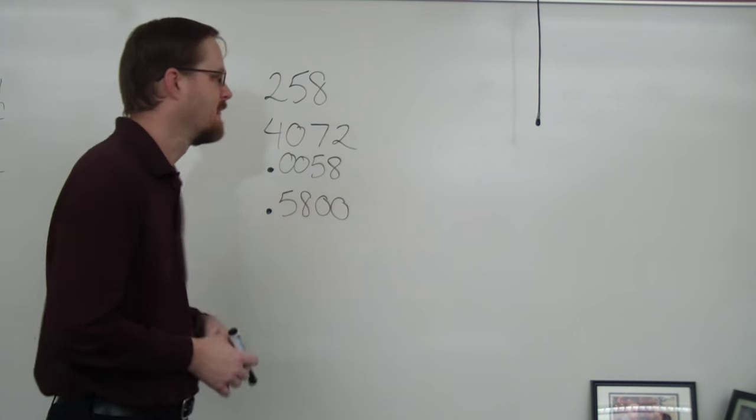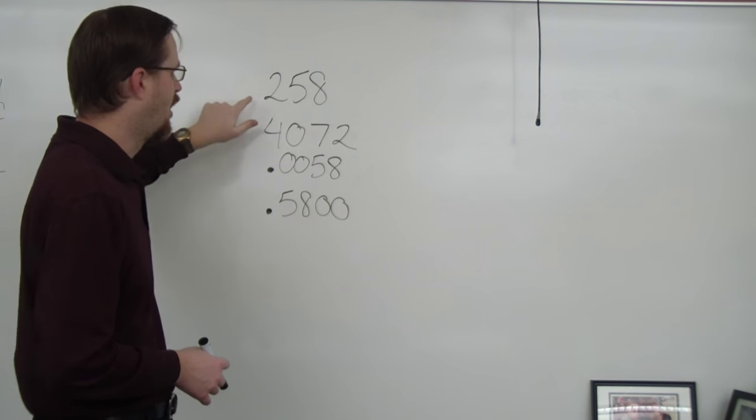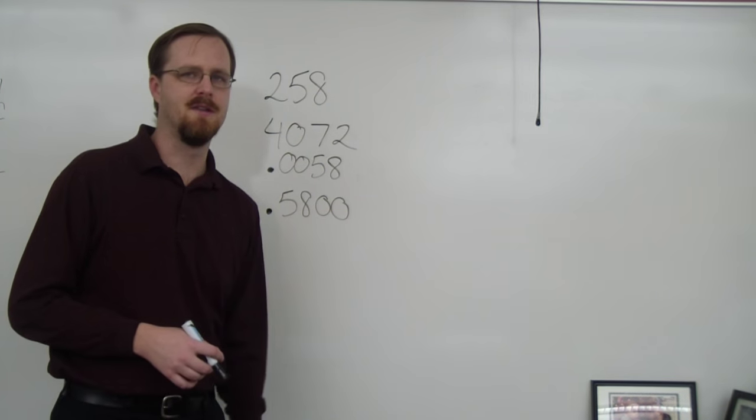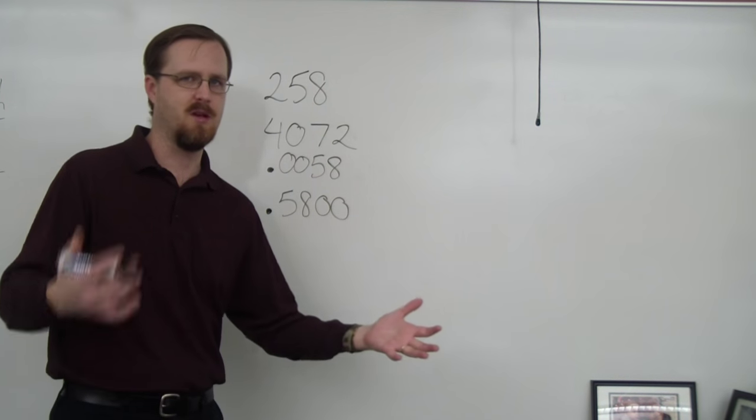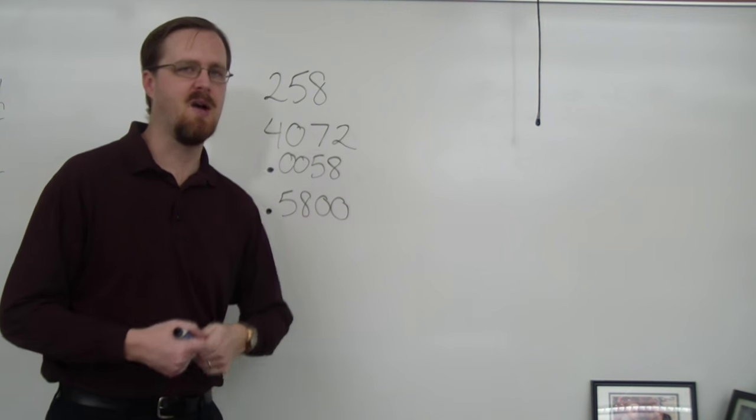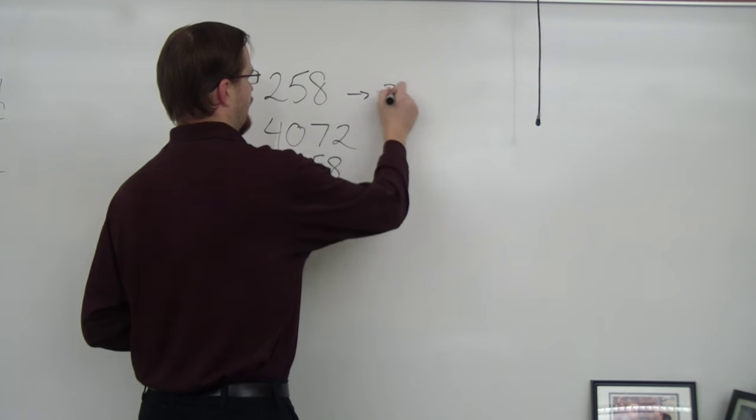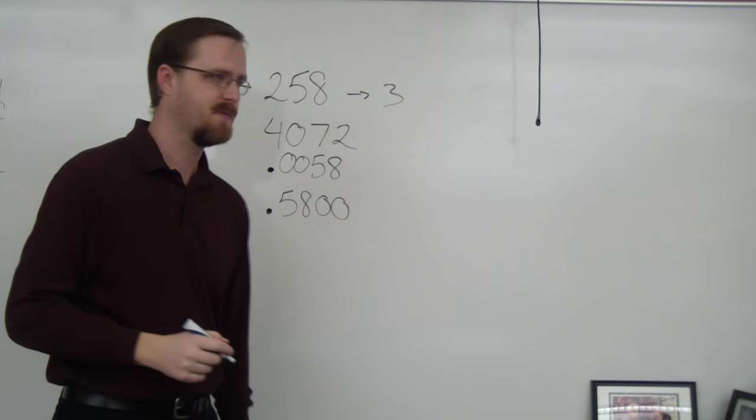So I've got some examples right here. As you can see, this first number is 258. Well, all three of those numbers are non-zero digits. They're all numbers that are between 1 and 9. That's a 2, that's a 5, that's an 8. All three of those count. They are all sig figs. So this has three sig figs.